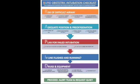Welcome to this short video for the introduction of the Rapid Obstetric Intubation Checklist. The Rapid Obstetric Intubation Checklist is designed to be used during any obstetric intubation, including Category 1 Caesarean sections. Having prepared their equipment, the ODP reads out each point of the checklist while the anaesthetist pre-oxygenates and the surgeon preps.